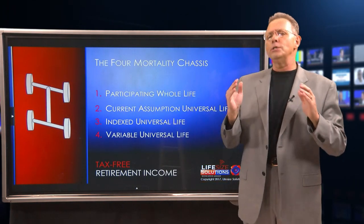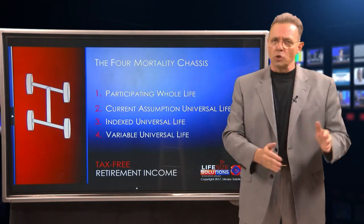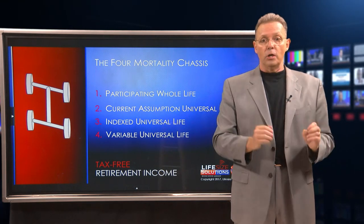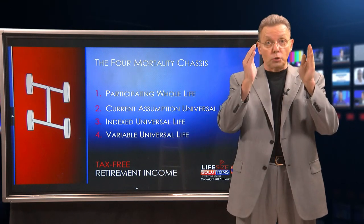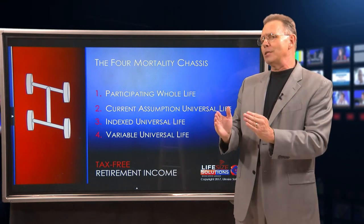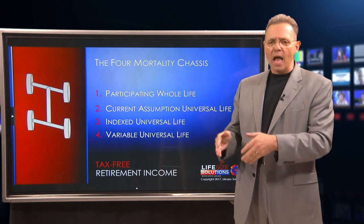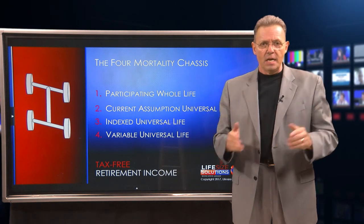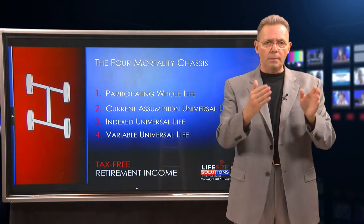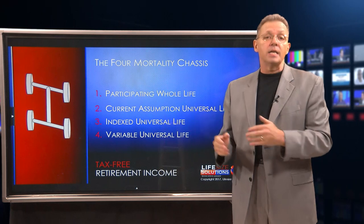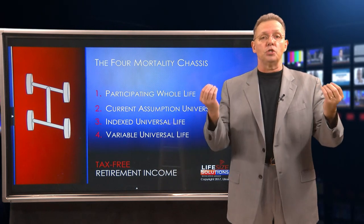The four major chassis are: participating whole life, current assumption universal life, indexed universal life, and variable universal life. Depending upon the client's propensity for risk is how I'm going to choose the chassis.